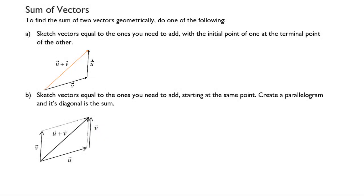Let's look at sums of vectors. To find the sum of two vectors geometrically, do one of the following. Sketch vectors equal to the ones you need to add with the initial point of one at the terminal point of the other.